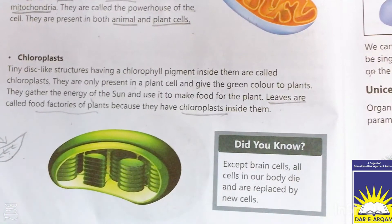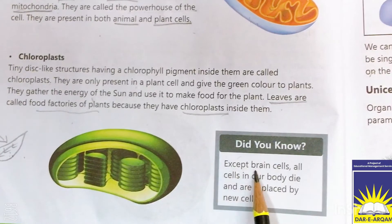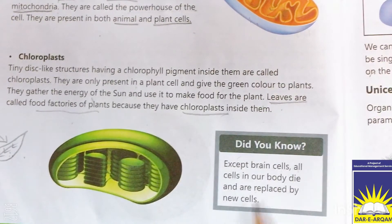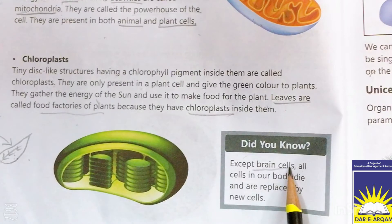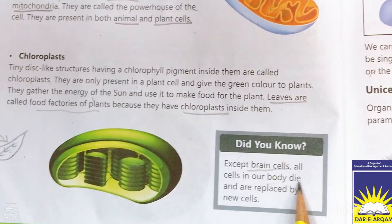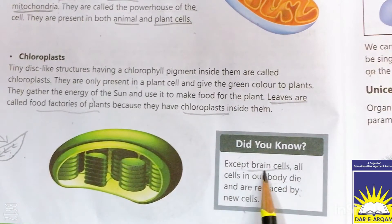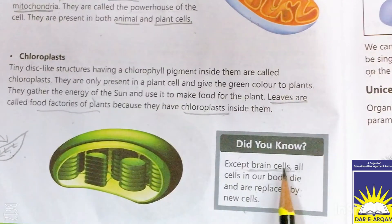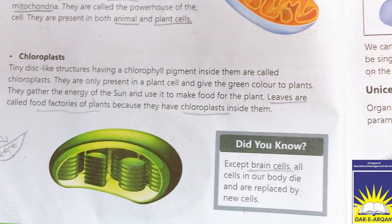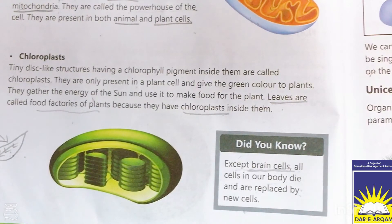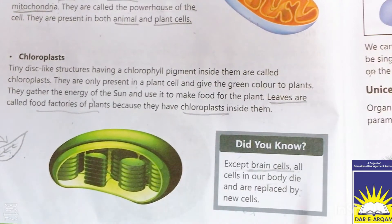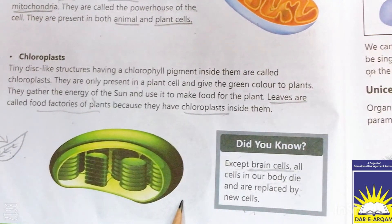Did you know — except brain cells, all cells in our body die and are replaced by new cells. Brain cells کے علاوہ باقی سارے body cells مر جاتے ہیں اور new cells سے replace ہو جاتے ہیں۔ لیکن brain cells ایک بار مر جائیں تو دوبارہ replace نہیں ہو سکتے — باقی body cells replace ہو سکتے ہیں۔